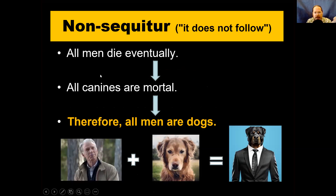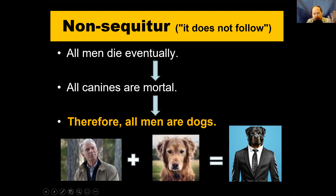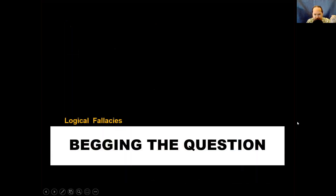Here's another example: All men are mortal. All canines are also mortal. Therefore, all men are dogs. Does that follow? No, that doesn't make sense. Just because they both die doesn't mean they are the same species. Obviously, men are not dogs — even in the metaphorical sense some people might use.